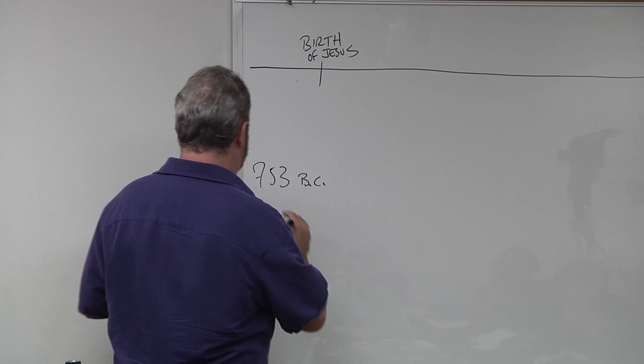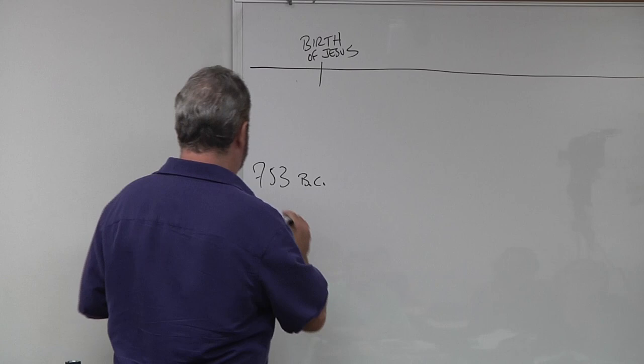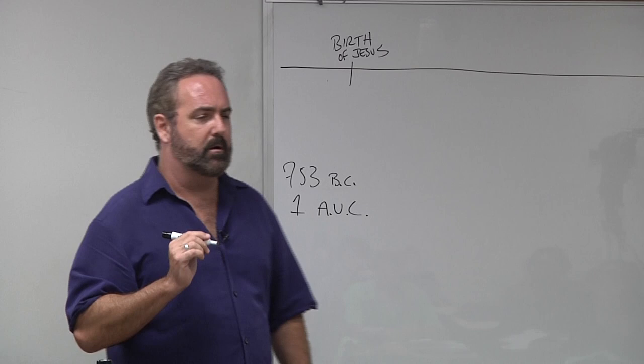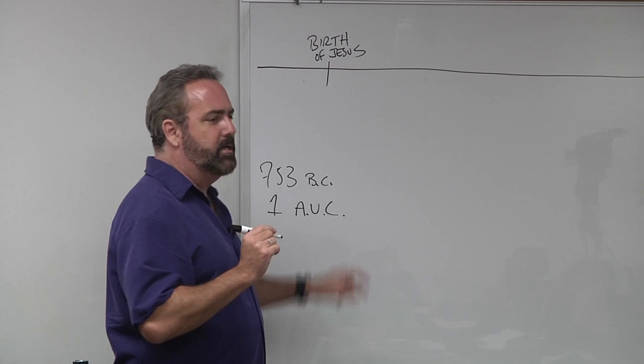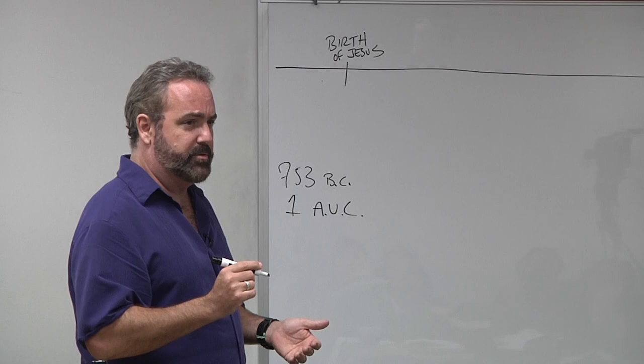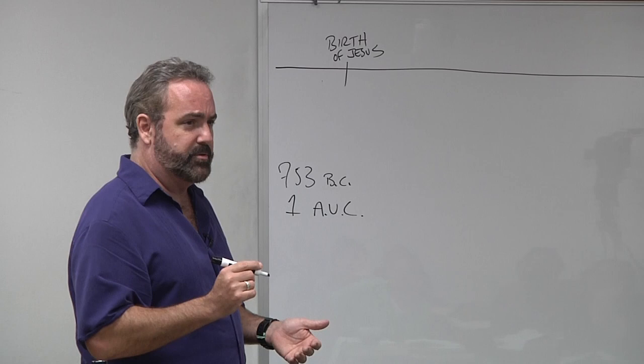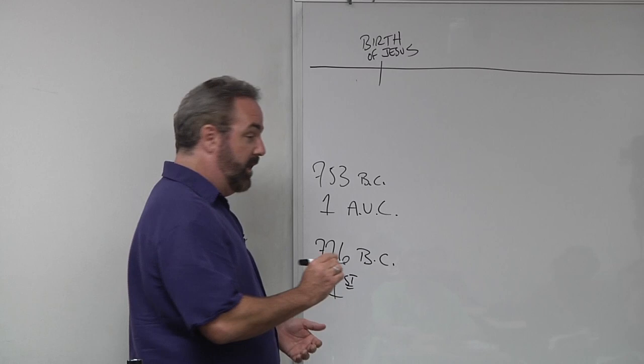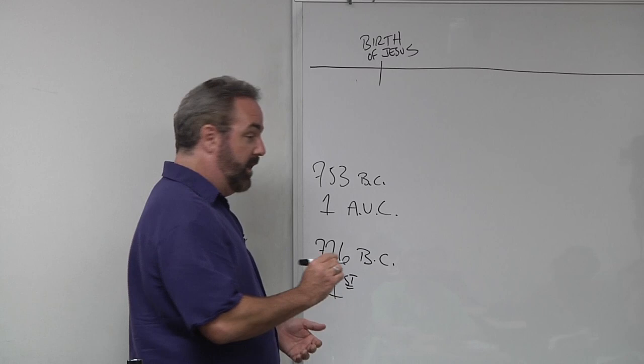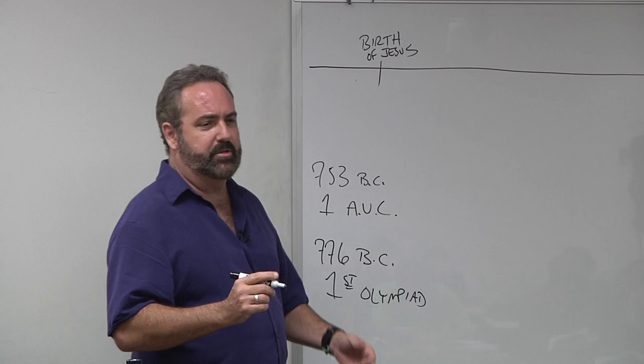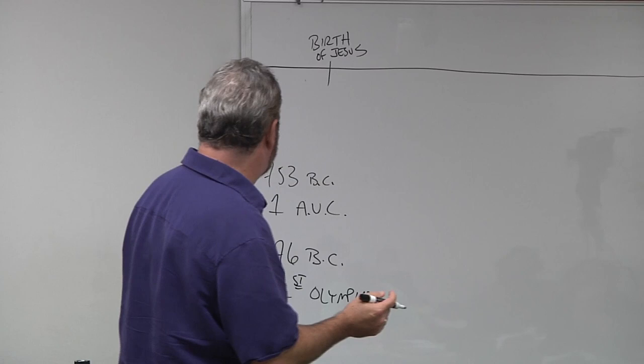They began their calendar in what we would call 753 BC. For them, this is the year number one AUC. Anybody take Latin and learn what AUC stands for? It's Latin for ab urbe condita, from the founding of the city. This was the year in which they believed the city of Rome had been founded. Anybody know where the Greeks began their calendars from? We would call it 776 BC. For them, this is the year of the first Olympiad. This was their founding moment when they managed to become civilized enough that every four years they could set aside their differences for a couple of months and compete athletically in a non-lethal way for glory and fame. So memorable founding events like this are how you create a calendar.